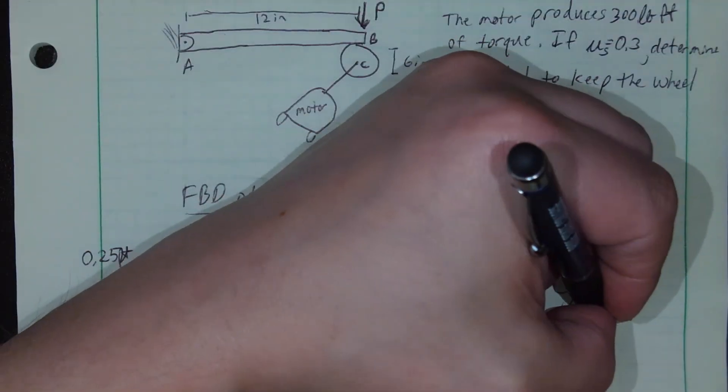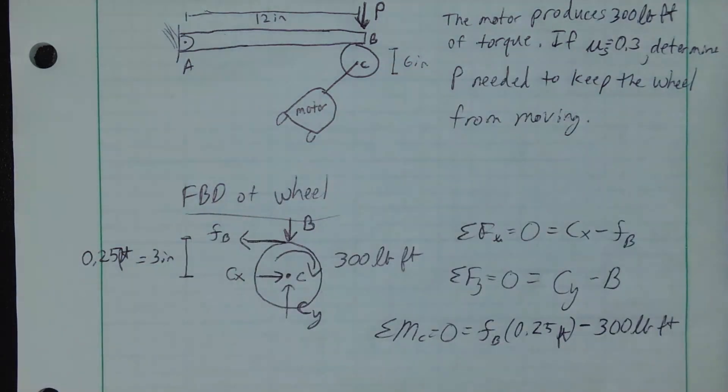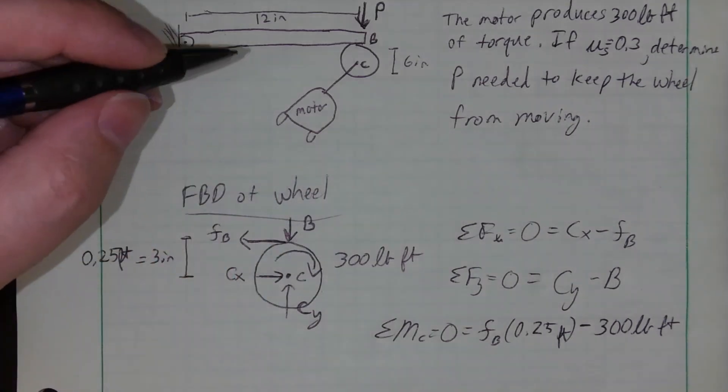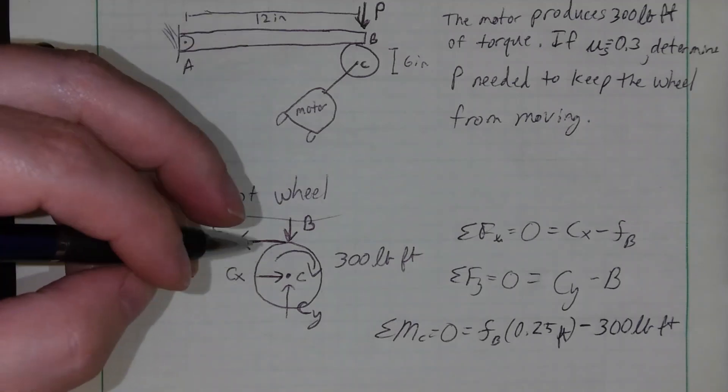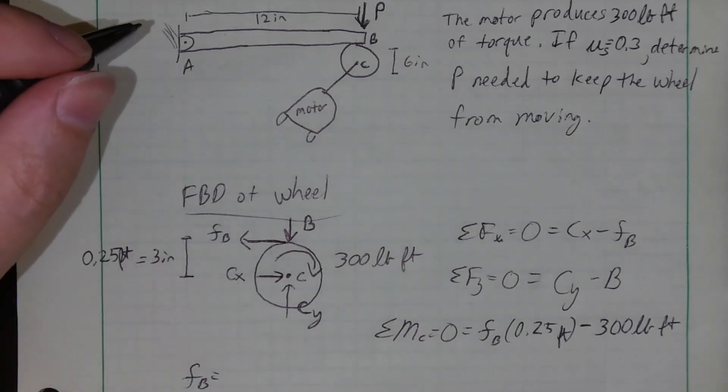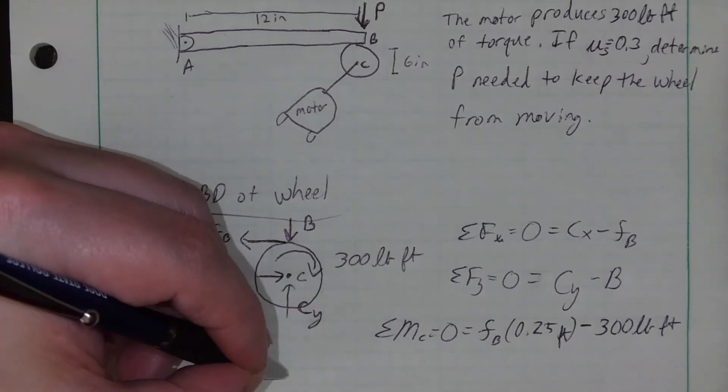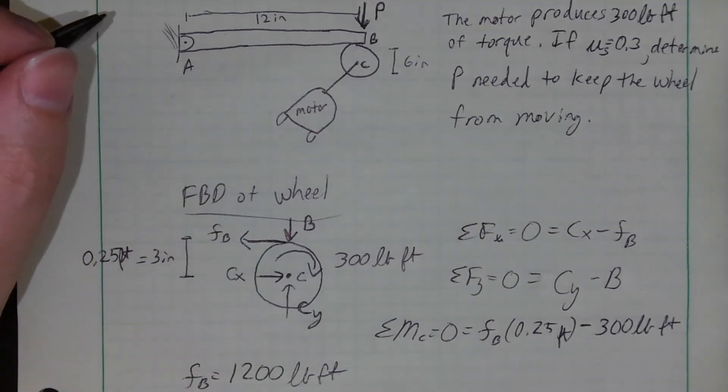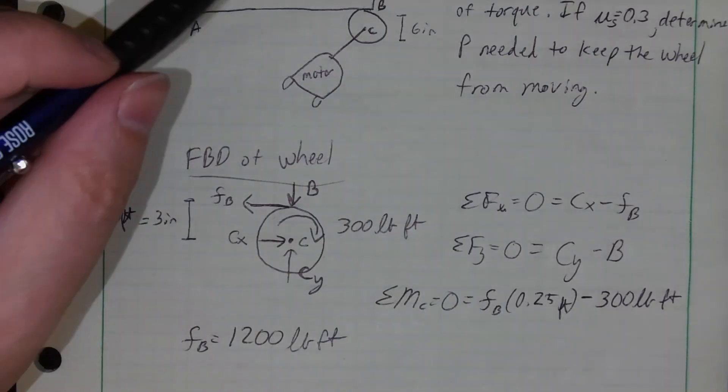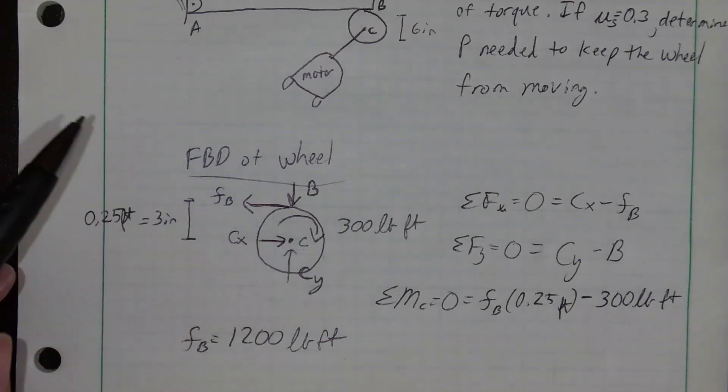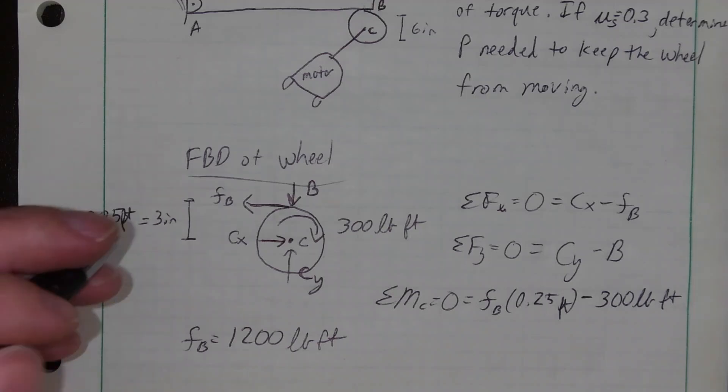I do have this friction force causing a counterclockwise moment, so that's FB at a distance of 0.25 feet, and then I've got a negative 300 pound-foot torque being applied by the motor. So the friction has to be the sole force counteracting that moment caused by the motor. So hopefully you're coming back now or go ahead and solve out. All right, that friction at B has to be basically four times that 300, so 1200 pound-feet. That's going to be the friction force.